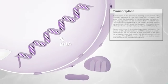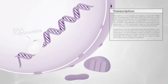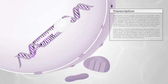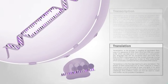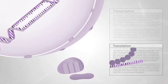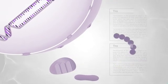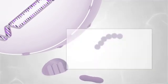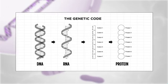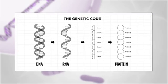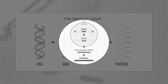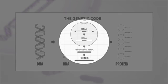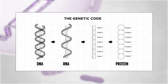The sequence of nucleotides in a gene is translated by cells to produce a chain of amino acids, creating proteins. The order of amino acids in a protein corresponds to the order of nucleotides in the gene. This relationship between nucleotide sequence and amino acid sequence is known as the genetic code.